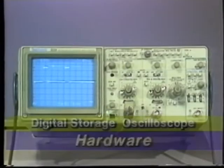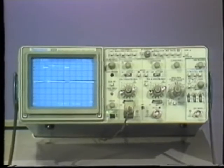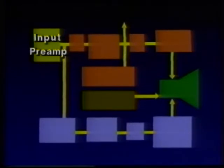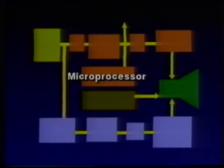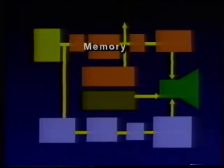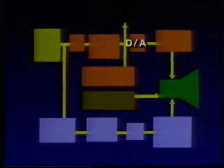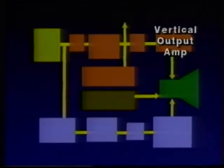A digital storage oscilloscope, or DSO for short, can be broken down into functional blocks: an input amplifier similar to those used in analog scopes; the vertical section, which includes an analog-to-digital converter that changes the analog signal into numbers; a microprocessor that controls scope functions; a memory for storing the signal numbers; and an output digital-to-analog converter which reconverts the signal numbers into analog signals for the vertical output amplifier.